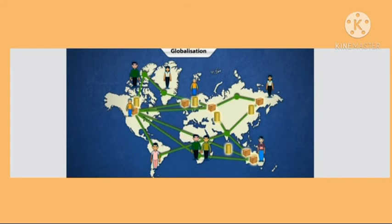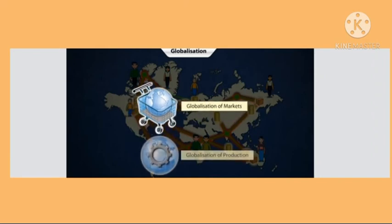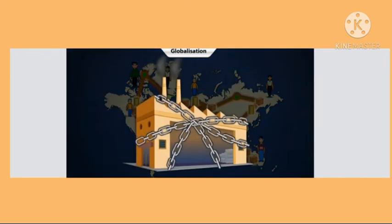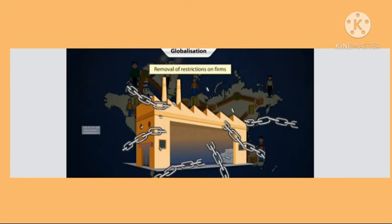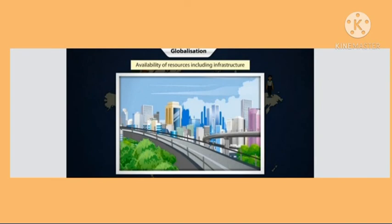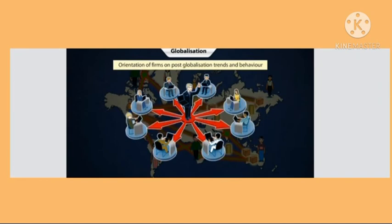There are two main factors forming the basis of globalization: first, globalization of markets by expanding and extending them across the world; and second, globalization of production by setting up production units in several countries. The success of globalization largely depends on: removal of restrictions on firms so business can take place without hindrance; availability of resources including infrastructure; provision of quality goods and services at competitive rates; and orientation of business firms on post-globalization trends.